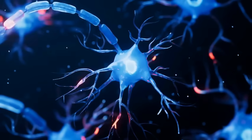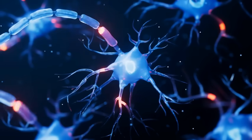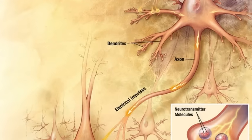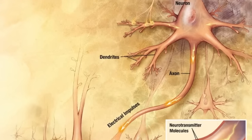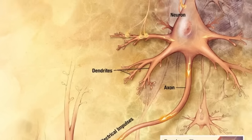Next are the dendrites. They look like branches on a tree. Dendrites receive signals from other neurons and carry them toward the cell body. You can think of them like satellite dishes picking up messages.